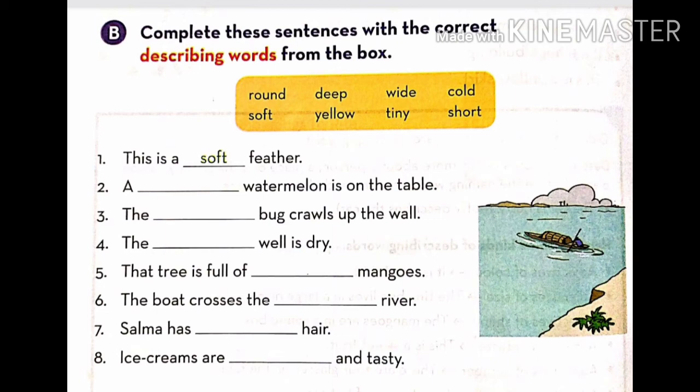Fifth, that tree is full of dashed mangoes. That tree is full of yellow mangoes. Next, the boat crosses the dashed river. The boat crosses the wide river.